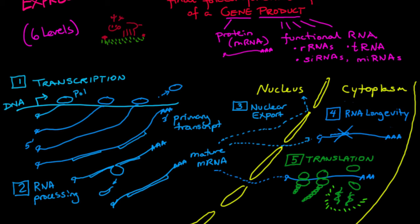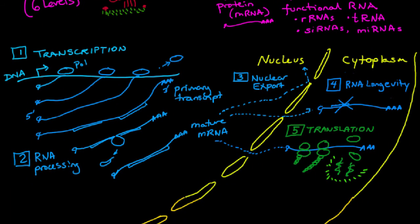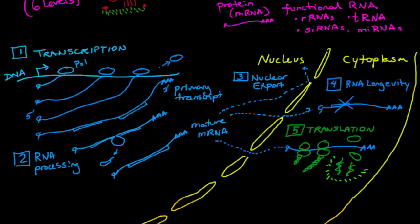But there is one other level of protein expression regulation, and that is for proteins that need to be modified before they are final folded functional gene products. That's the sixth level of gene expression regulation, and it's called post-translational modification. Because some proteins, even once they are transcribed and processed and exported and they survive and they're translated, they still need to perhaps pair up with their neighbors in order to be functional.